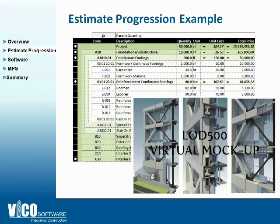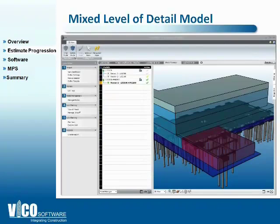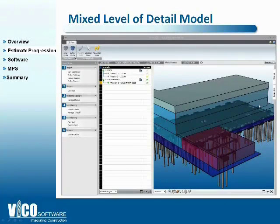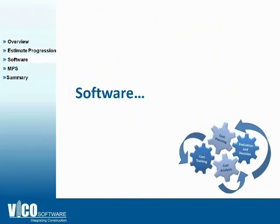That enables us to have a mixed level of detail models — everything doesn't have to be at the same level of detail. Here we've got a full foundation model, but all the superstructure is just being costed with square foot allowances at this point. Every time you've got something which can replace the square foot allowances, you just deactivate that massing model and replace them with actual costs from modeled elements.